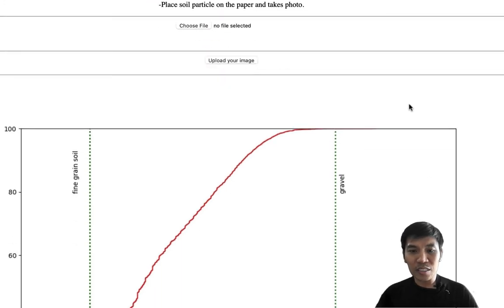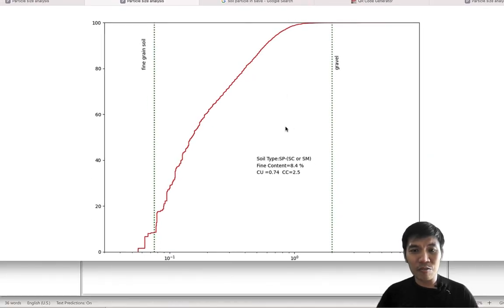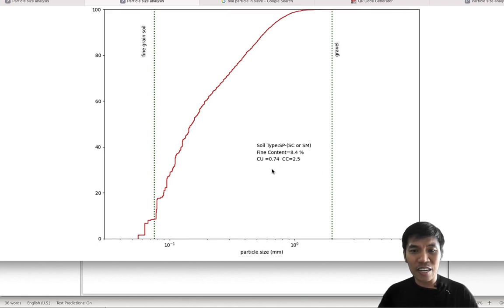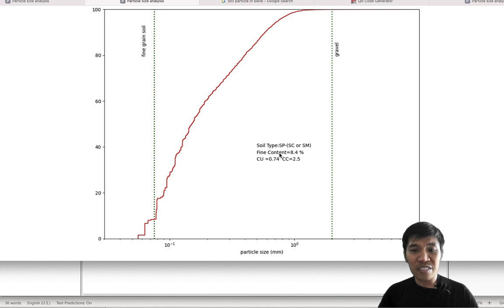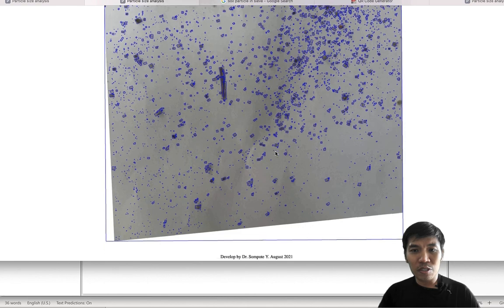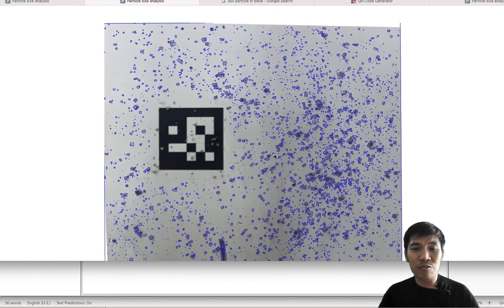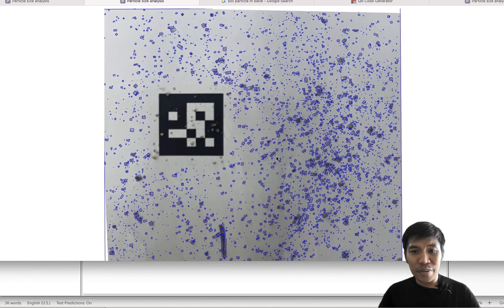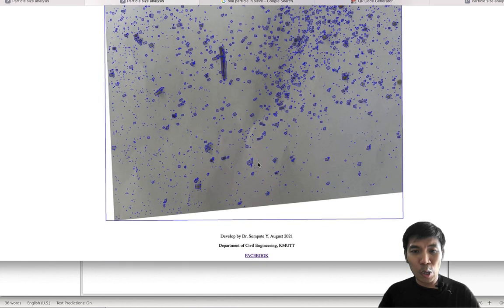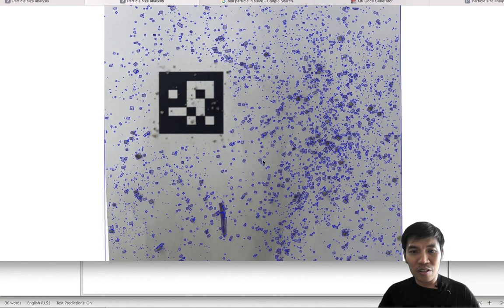Once finished, you can see the gradation curve for our soil. The fine content is about 8.4 percent, and the soil type dual symbol is SP-SC or SP-SM. To know if it's SC or SM, you have to conduct the Atterberg limit test. There's also a way to show the detection of the image to see what's going on.